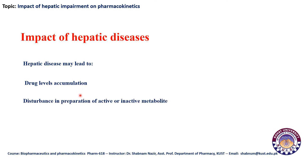Another impact is disturbance in the preparation of active or inactive metabolites. The liver plays a very important role in converting non-active drugs to their active forms, such as the conversion of a prodrug into its active metabolite. If the active metabolite is not being formed, there would be no desired pharmacological or therapeutic response, as the drug is not converting to its active form.